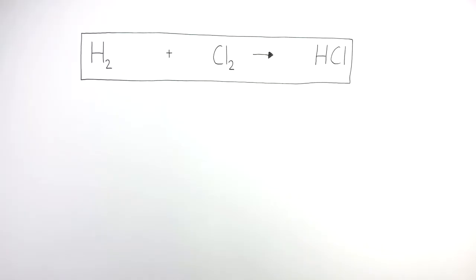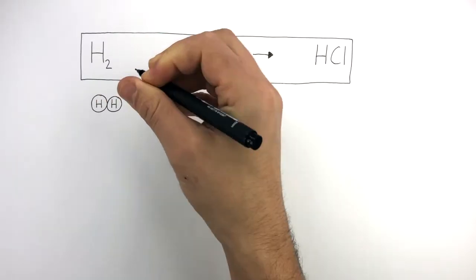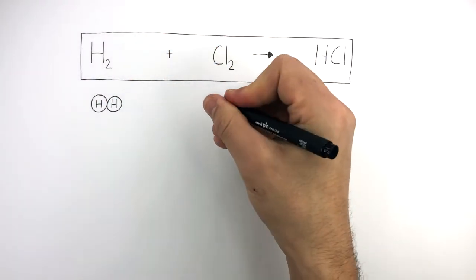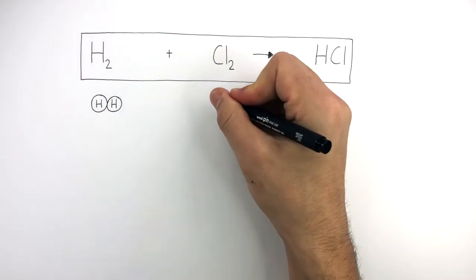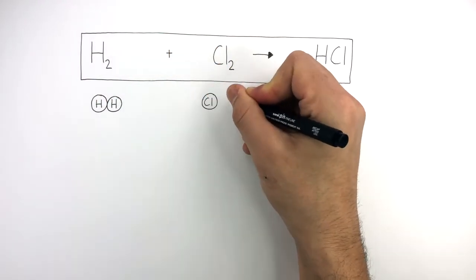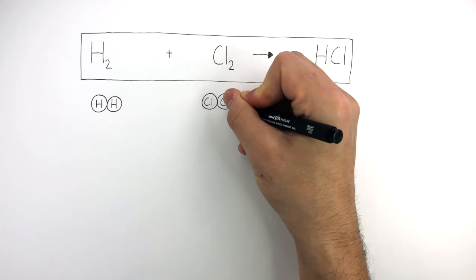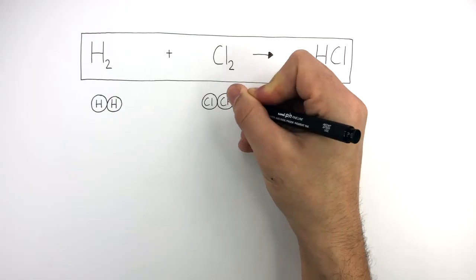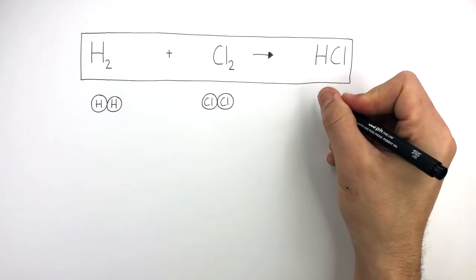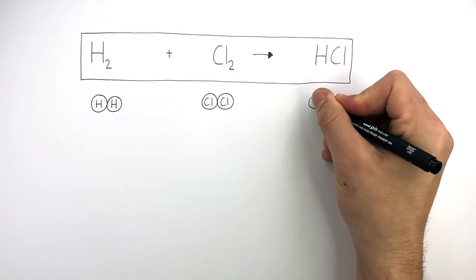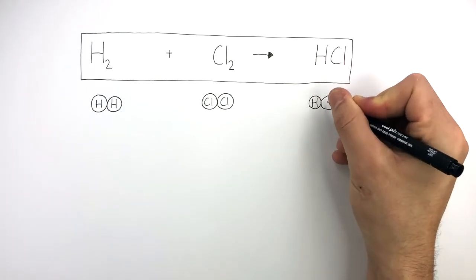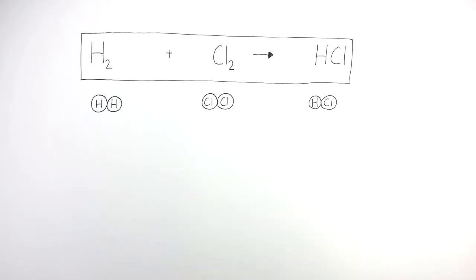The equation tells us there is one hydrogen molecule consisting of two hydrogen atoms, one chlorine molecule consisting of two chlorine atoms, and one hydrogen chloride molecule consisting of one hydrogen atom and one chlorine atom.